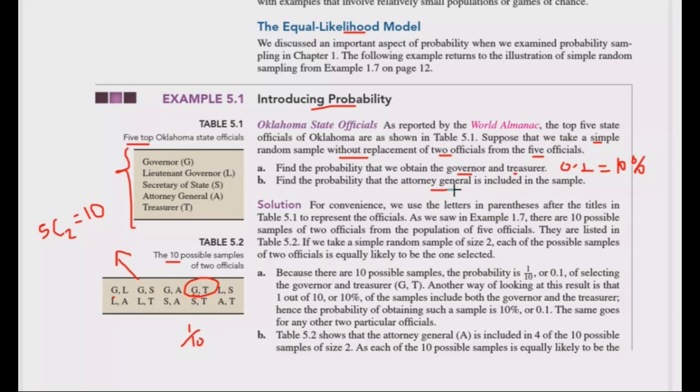Now find the probability that the attorney general is included in the sample. Looking at the sample space, we count how many combinations include the attorney general. There are four outcomes that include the attorney general out of ten total outcomes, so the probability is 4 over 10, which equals 0.4 or 40 percent.